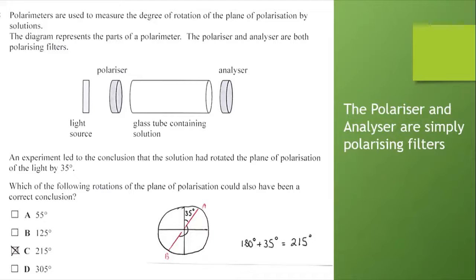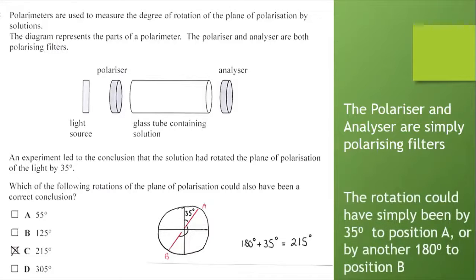Which of the following rotations of the plane of polarization could also have been a correct conclusion? Well, the rotation 35 degrees to position A could also have been by a further 180 degrees to position B. In that case, the angle would be 180 plus 35, which is 215 degrees. I would encourage you, if you're not sure about it, just to sketch little diagrams like this as you go through these multiple choice questions.